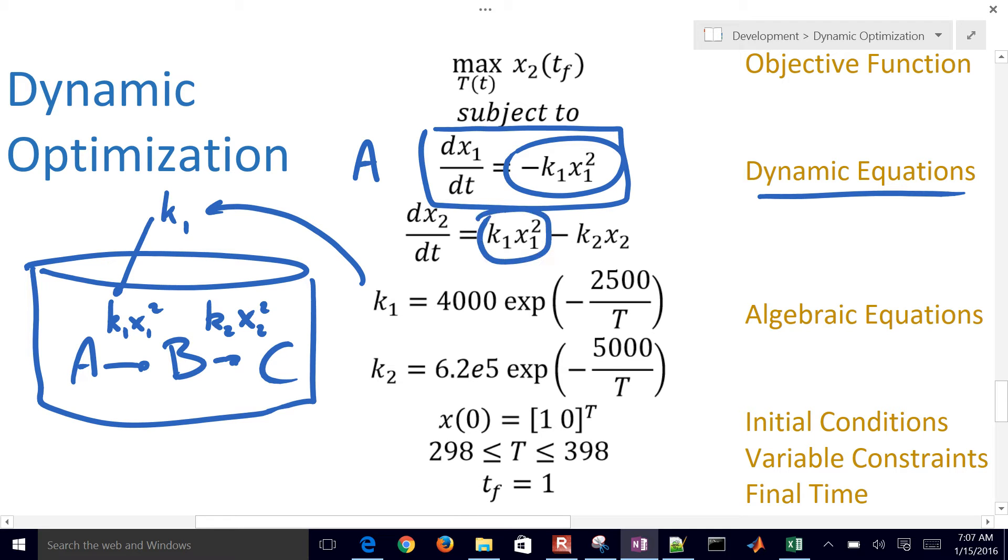And then you have, as A is consumed, it's converted to B. And then you also have the production rate of C there. So you lose B as you convert it to C as well.